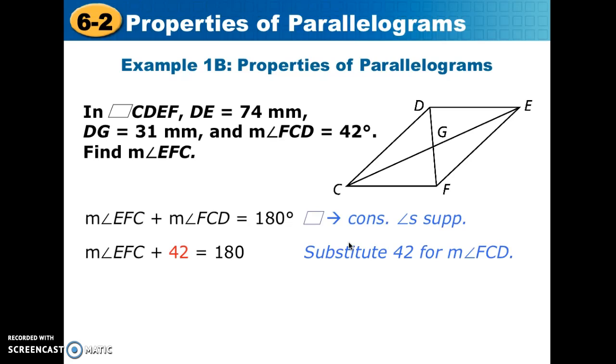Show the substitution for the one that we do have, and then solve by subtracting using the subtraction property of equality to get the missing angle, and we find that that's 138 degrees.